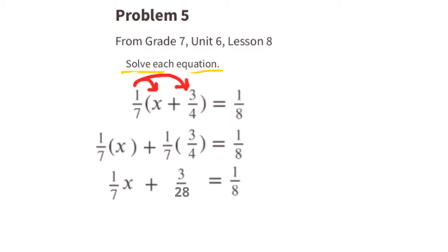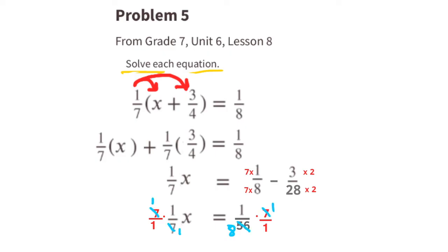To get X by itself, we need to subtract 3/28 from both sides of the equal sign. For 1/8 minus 3/28, I need to find a common denominator. I think I'll use 56. So 7 times 8 is 56, and 7 times 1 is 7, so that turns into 7/56. And 28 times 2 is 56, and 3 times 2 is 6. 7/56 minus 6/56 is 1/56. We need to multiply both sides by the reciprocal of 1/7, and that's 7/1. So on the left side, we have 1X, or X, and on the right hand side, we have 1/8. So X equals 1/8.